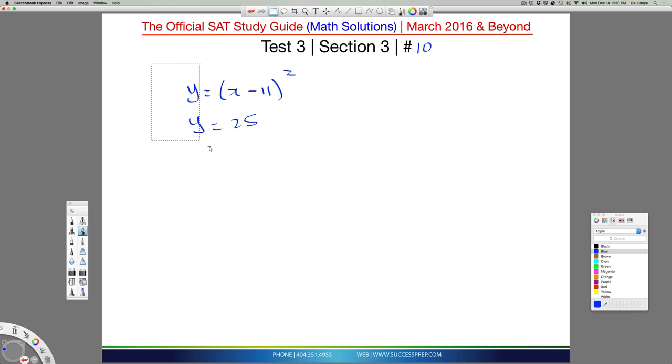Now, just as a basic math rule, if this y is equal to this and also equal to 25, the same y is equal to two different things, it means those two different things are equal to each other. So I'm able to say x minus 11 squared is equal to 25.